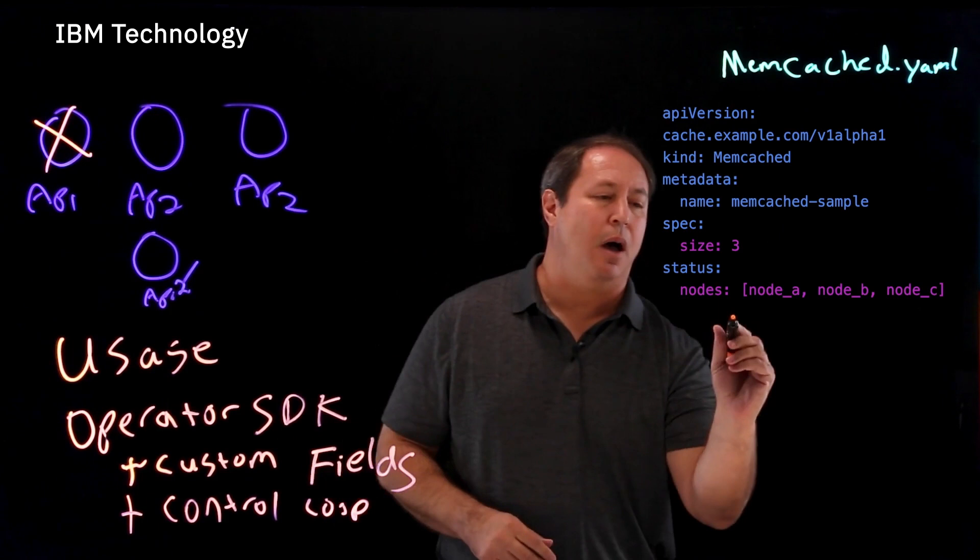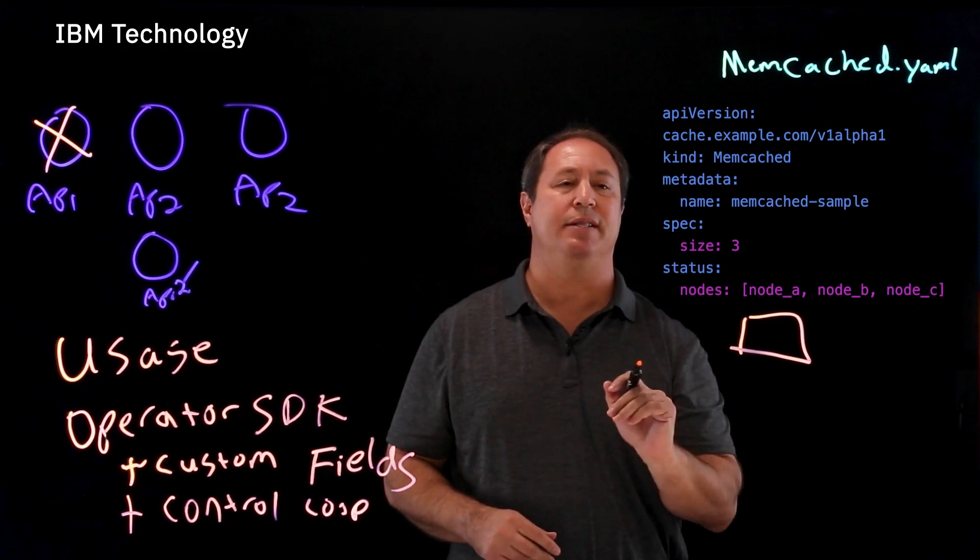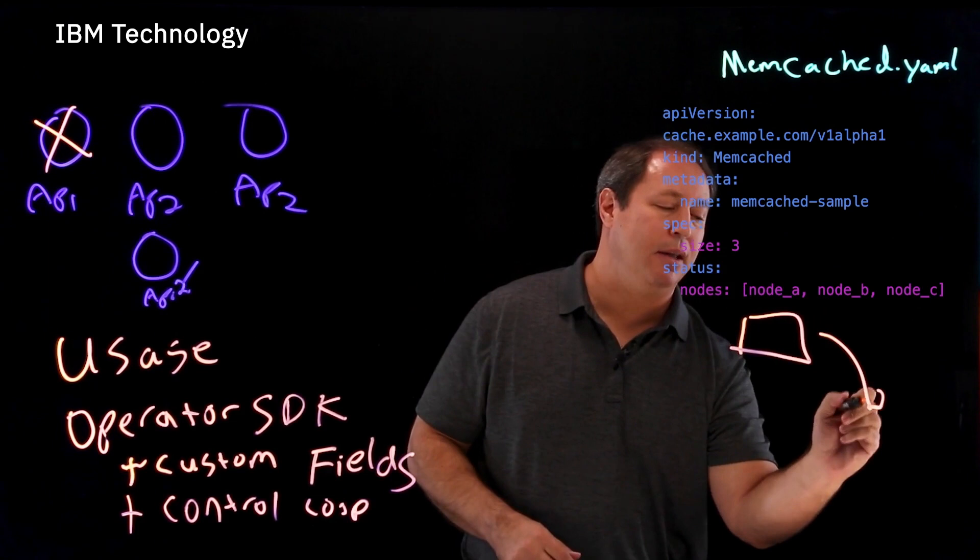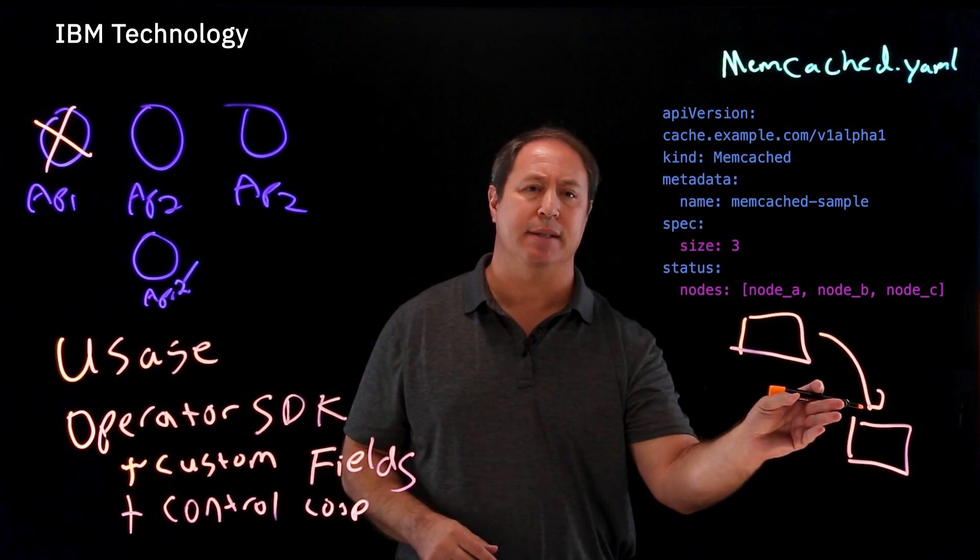They're going to start by declaring what is my desired state. That's going to be sort of the input passed in. Here's what I want. And then what's going to happen at that point is we're going to evaluate what is my current actual state.